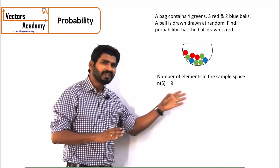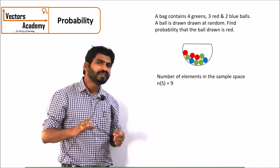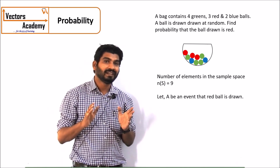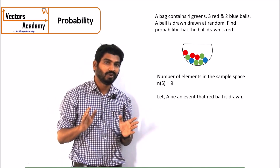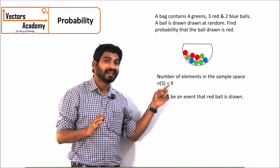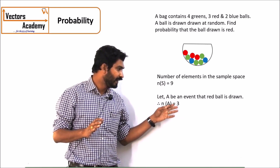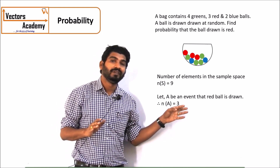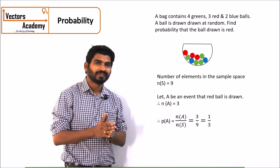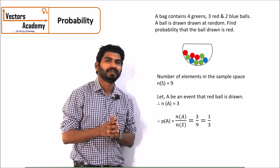Once we have the sample space, we look at what event is asked. The event is that we need exactly a red ball. There are 3 red balls in the bag, so n(A) = 3. The probability of A will be 3 by 9, that is 1 by 3.